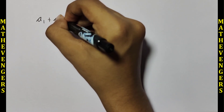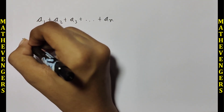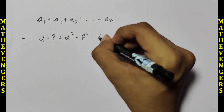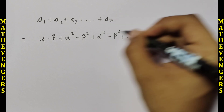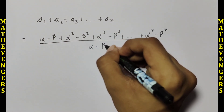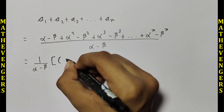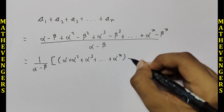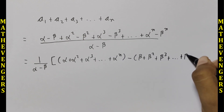Now, adding all these equations, we will get a₁ + a₂ + a₃ + ... + aₙ equal to [alpha - beta + alpha² - beta² + alpha³ - beta³ + ... + alphaⁿ - betaⁿ] divided by (alpha - beta). This equals 1/(alpha - beta) times [alpha + alpha² + alpha³ + ... + alphaⁿ minus beta + beta² + beta³ + ... + betaⁿ].